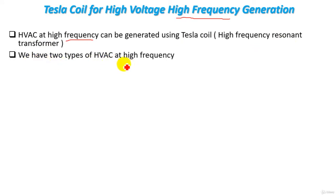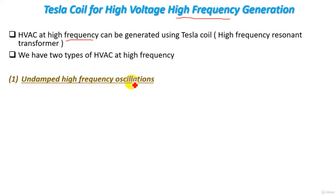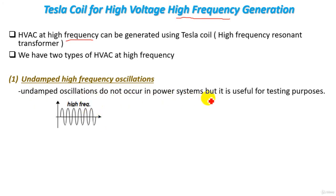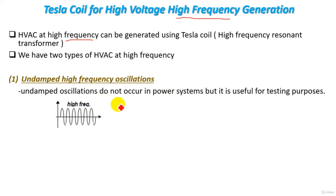We have two types of high voltage AC at high frequency. The first type is undamped high frequency oscillations. The waveform of this type shows oscillations that are not damped. This type of oscillation does not occur in power systems, but is useful for testing purposes. In power systems, resistance exists and helps to damp the oscillations.